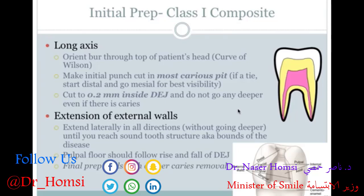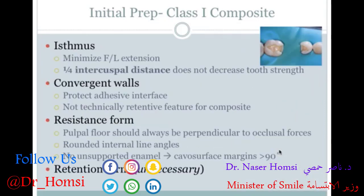The pulpal depth of your prep at this point will be somewhere between one-half and two-thirds the length of a 245 burr, if that's what you're using. You want to extend your prep around the cusps if possible to avoid the pulp horns and to avoid weakening tooth structure more than necessary.